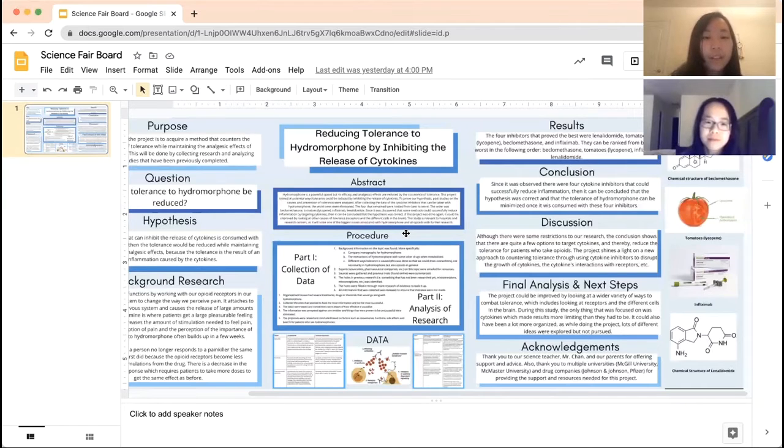Out of all the ways that were found we only kept four that seemed the most effective and it was beclomethasone, tomatoes which contain lycopene, infliximab, and lenalidomide. They were also ranked in that order from best to worst.